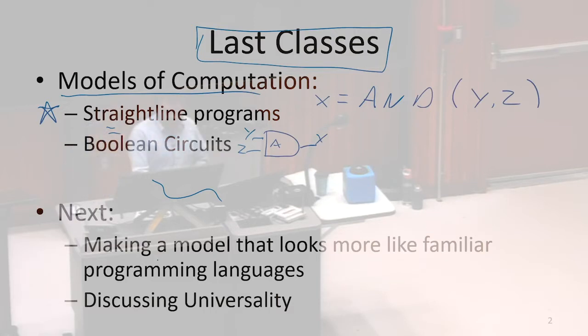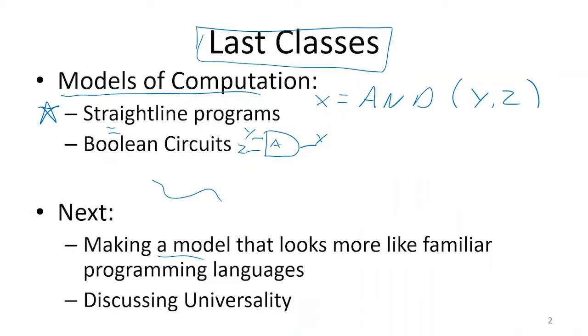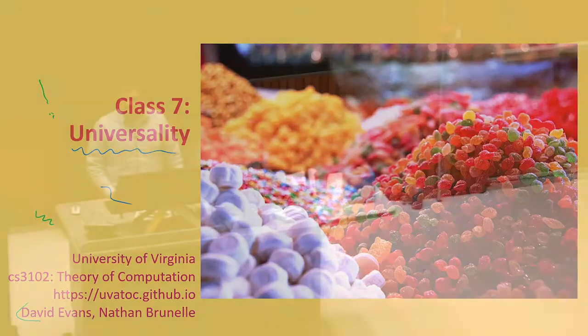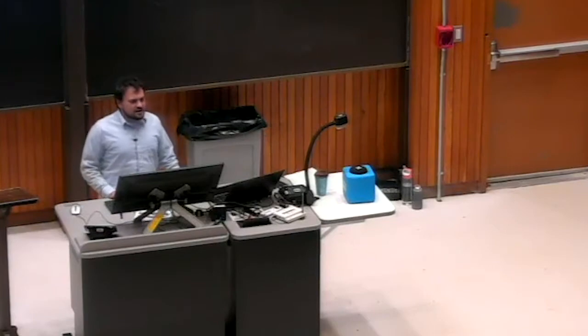We're going to change the straight-line programming model to be something that looks more like Python, and show that it's actually secretly the same computing model, just with extra syntactic sugar. That's why we have candy on this slide today. Syntactic sugar means changes that sort of change what the programming language looks like, but doesn't actually fundamentally change what it's doing. We're just making it nicer for humans to use.